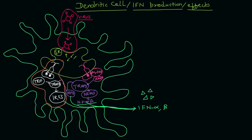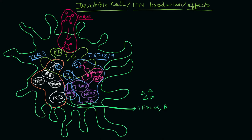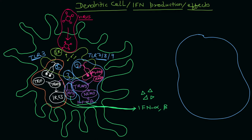These green triangles you're seeing on screen are the representative image for interferon alpha and beta. Here I'm outlining the pathways — in brown color you're seeing the TLR3-dependent pathway, and in blue color the other pathways for TLR7, 8, and 9. These are the toll-like receptor molecules that are important for interferon alpha and beta production.